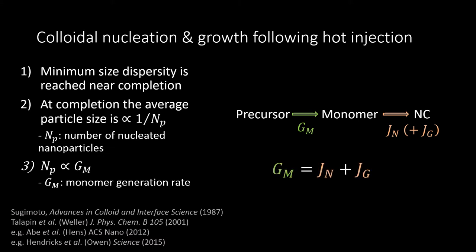This can be written as the mass balance equation where the monomer generation rate Gm is equal to the monomer consumption rate to nucleation Jn and the monomer consumption rate to growth Jg. However, recent mechanistic advances have revealed the presence of cluster intermediates, which can either be magic size or amorphous. These species can be in dynamic equilibrium with the monomer or be the direct monomer-to-nanocrystal nucleation and growth pathway. The presence of such species acts to further partition the monomer, leading to competition between the nucleation of nanocrystals or clusters by adding a third partitioning rate Jpnc. Thus, to fully control the reaction, new handles to manipulate the cluster concentration must be developed.